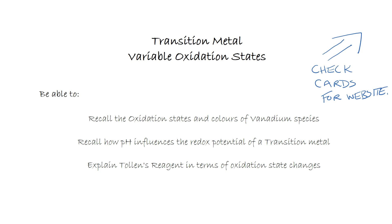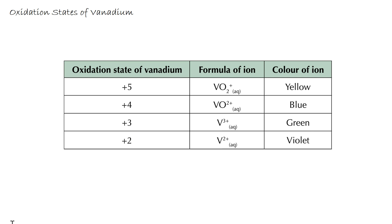By the end of today's lesson you should be able to recall the oxidation states and colours of vanadium species, recall how pH influences the redox potential of a transition metal, and explain the Tollens reagent in terms of oxidation state changes.